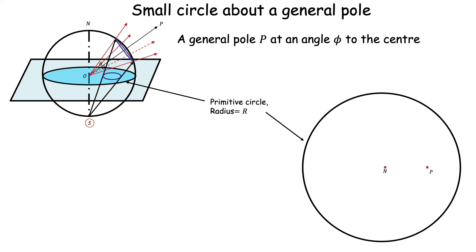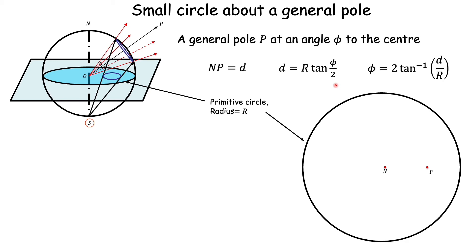Let us consider a more general case in which OP is a direction inclined to the vertical, so it projects as a general pole within the primitive. Let the distance of this pole from the center NP be D. The distance-angle relation gives D = R·tan(φ/2), or inverting, the angle phi equals 2·tan⁻¹(D/R). So for any pole given within the primitive circle, we can always find its angle from the center using φ = 2·tan⁻¹(D/R).